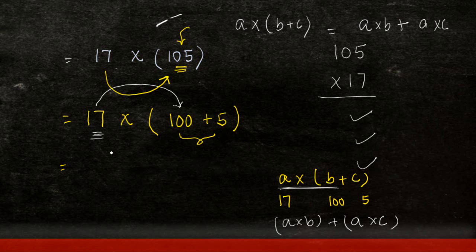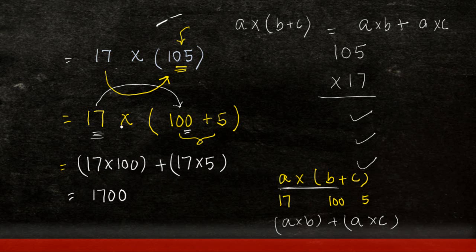If I apply it to this case, what will I get? I get 17 times 100 plus 17 times 5. Now, 17 times 100 will give me 1700. Why did I use 100? I use 100 because I know I can easily multiply 100 with 17. Plus, 17 times 5 will give you 85. I've quickly done this addition. You can do it. The answer is 1785.